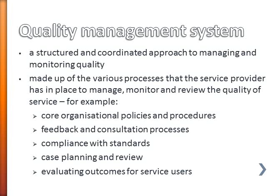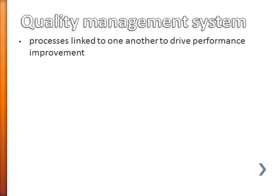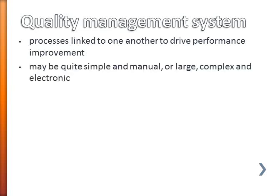A quality management system includes things like the organisation's policies and procedures, feedback and consultation processes that you have with service users, compliance with standards, and also things like case planning and review and evaluating outcomes. The quality management system is really just a series of processes that are linked to one another, and importantly their purpose is to actually drive improvement.